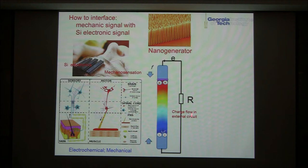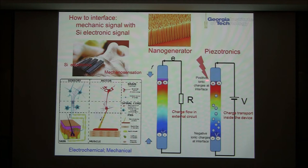Now let's change it a bit. Instead of having this blocking layer here, so the current can flow through — under mechanical strain, polar charge is created. The polar charge can tune the transport of the charge carriers inside these semiconductor materials under the driving of the external voltage.